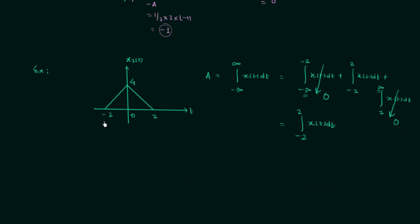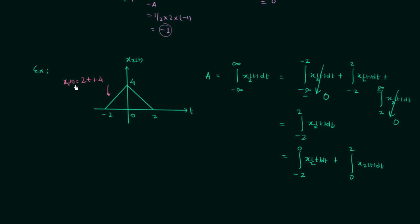From minus 2 to 0, signal x2(t) is a straight line with a positive slope, and from 0 to 2 it is a straight line with a negative slope. The equation of x2(t) from minus 2 to 0 is 2t plus 4, and from 0 to 2 it is minus 2t plus 4.